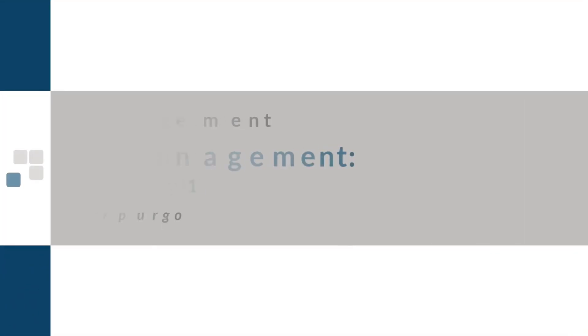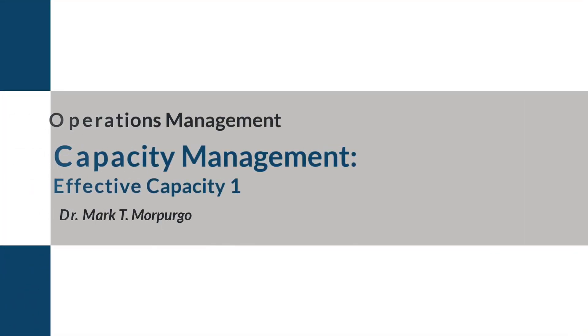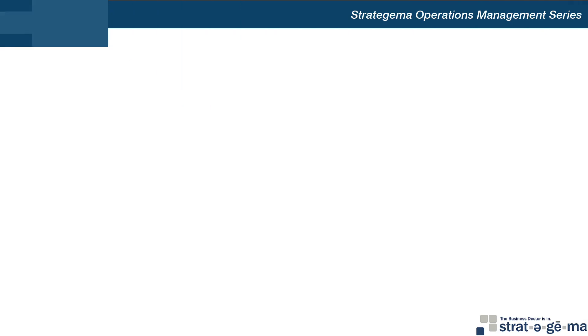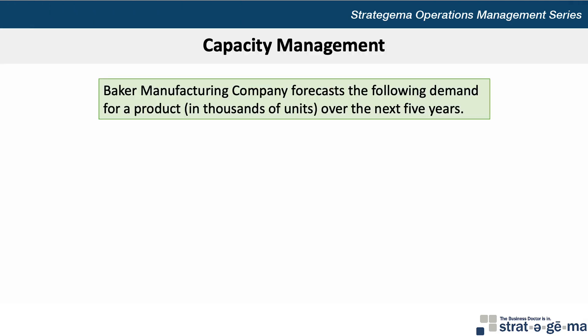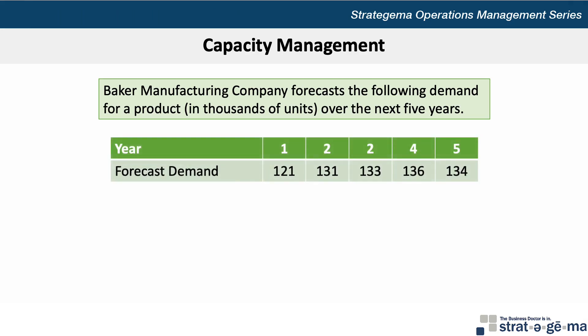This problem walkthrough video will demonstrate how to calculate the effective capacity of a factory. Here's the data for our problem. Baker Manufacturing Company forecasts the following demand for a product in thousands of units over the next five years.